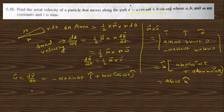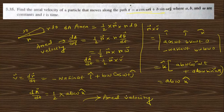So the areal velocity dA/dt is half of r cross v, which is half · abω k-cap. This is constant — demonstrating Kepler's second law.